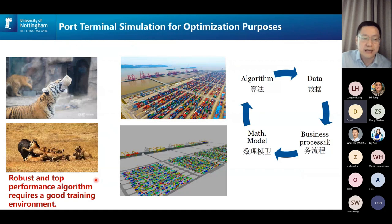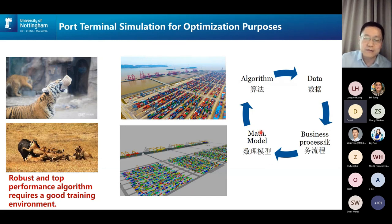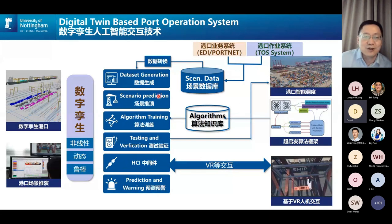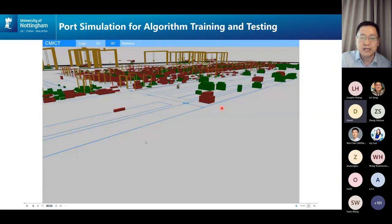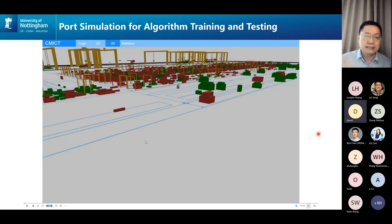Our team created a simulation using a state-of-the-art simulator, combining data, business models, and mathematical models and algorithms together in one system — what we call a digital twin for the port system. The outcome of this system is an algorithm library that can be used to solve multiple scenarios. These simulations are generated based on real-life data, and any data feed from the port system allows us to run the simulation at any time.